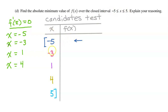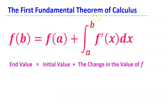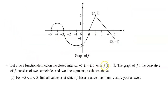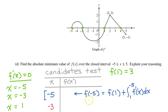Now we need to find the value of f at each x value. We can use the first fundamental theorem of calculus. The integral of f prime from a to b gives the change in the value of f from a to b. Then, the end value f at b equals the initial value f at a, plus the net change in value. In the setup of the problem, we were told that f at 1 is equal to 3 — this is our initial value. According to the first fundamental theorem of calculus, f at negative 5 should equal f at 1, plus the integral of f prime from 1 to negative 5.